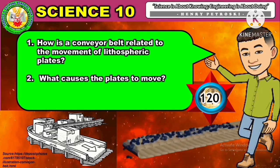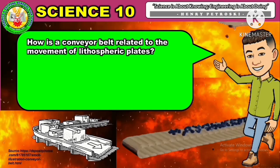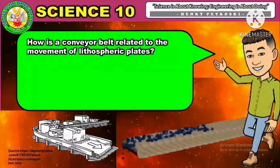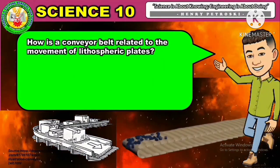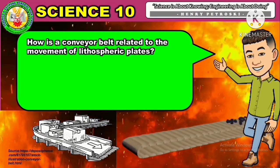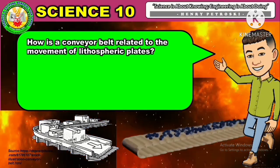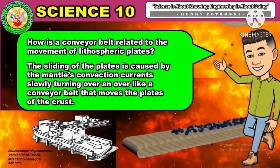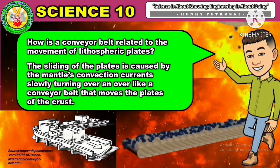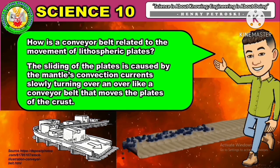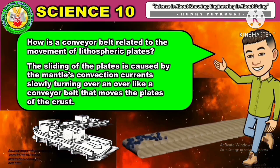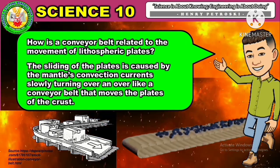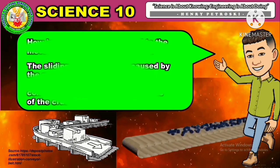Let us check your answer. How is a conveyor belt related to the movement of lithospheric plates? The sliding of the plates is caused by the mantle's convection currents slowly turning over and over like a conveyor belt that moves the plates of the crust.